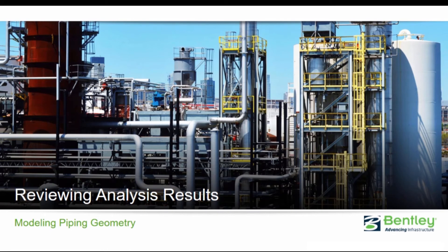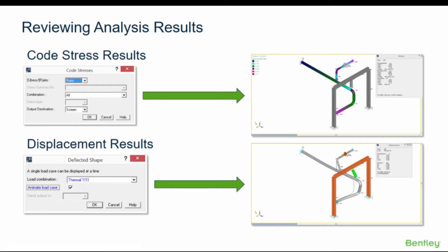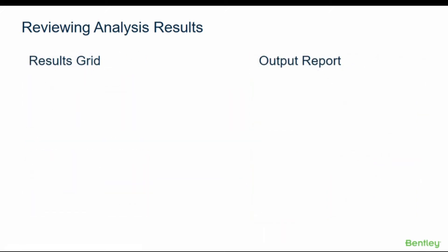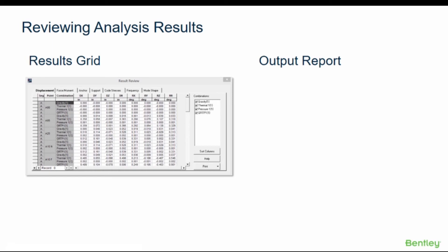We are now ready to review the analysis results. You can review many results on screen including code stresses and stress ratios, displacements, forces and moments, support and restraint forces, mode shapes, and pipe soil interface forces and deformations for buried piping. You can also review results in a grid format and output report format. The results grid displays a dynamic spreadsheet interface to review output results for displacement, forces and moments, anchors and support loads, and code stresses.